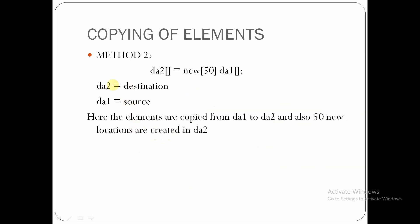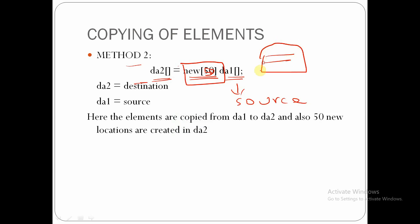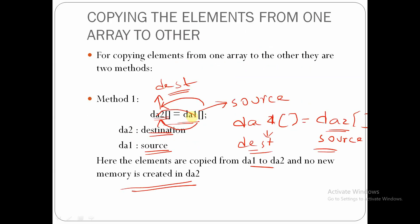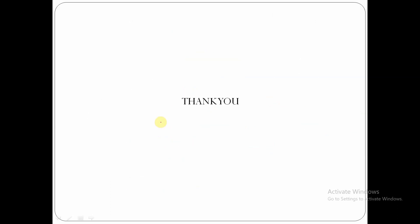In Method 2 for copying, da2 is the destination and da1 is the source. Here we use the `new` keyword, specifying `new[50]`, so 50 extra memory locations are created in da2 and the elements of da1 are also copied into da2. So elements are copied from da1 to da2, and additionally 50 new locations are created in da2. These are the two methods for copying elements from one array to another. Thank you.